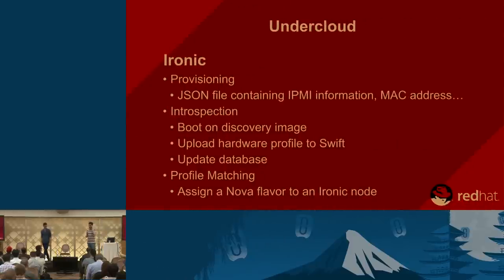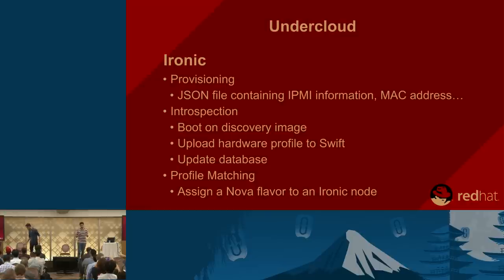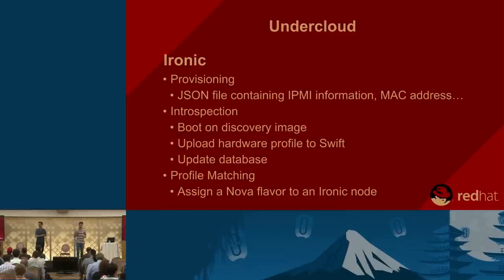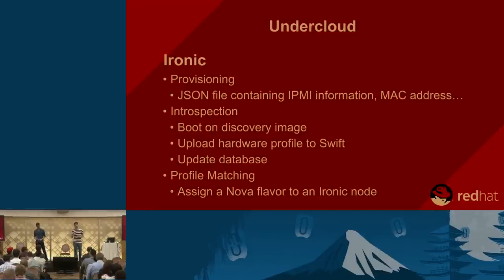When your undercloud is ready, the first thing you need to do is provide information about the servers you want to deploy to Ironic. You write a simple JSON file describing the IPMI information — username, password, etc. — and the MAC address of the interface you will use for PXE booting. Ironic can then perform actions on your servers. The first step is introspection, which has two phases: hardware discovery and hardware benchmarking.